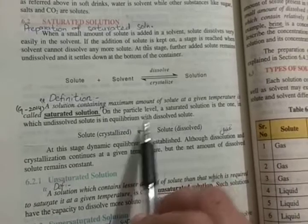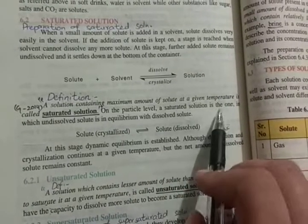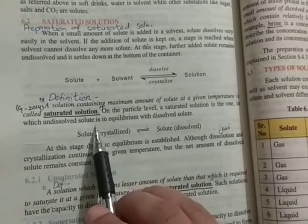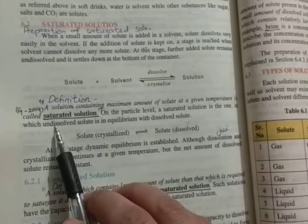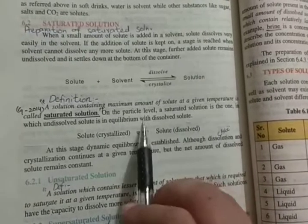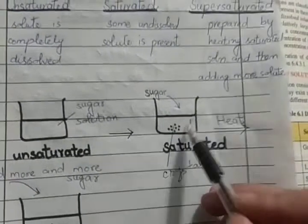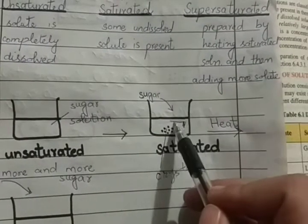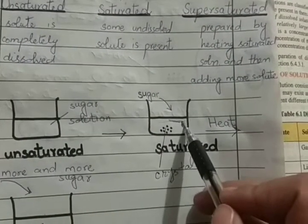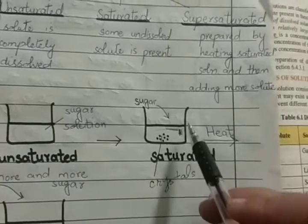At the particle level, a saturated solution is one in which the undissolved solute is in equilibrium with the dissolved solute. The undissolved and the dissolved solutes are at an equilibrium — that is, in balance. This is the saturated solution.